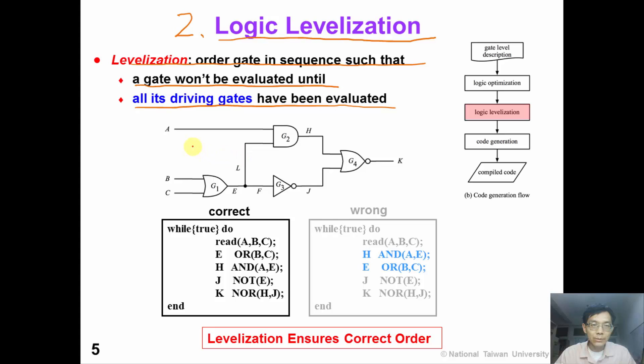For the same example, the left code is in correct order. If we swap the order of E and H, this won't be correct because we need to evaluate G1 first before we evaluate G2. So if we change the order, this code won't give us a correct output. So levelization is a very important step to ensure correct order of the code.